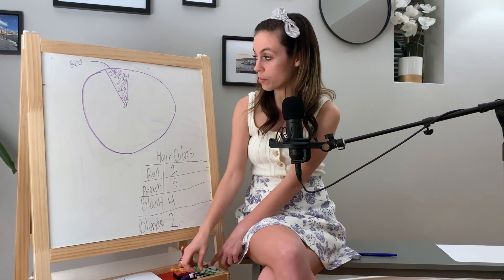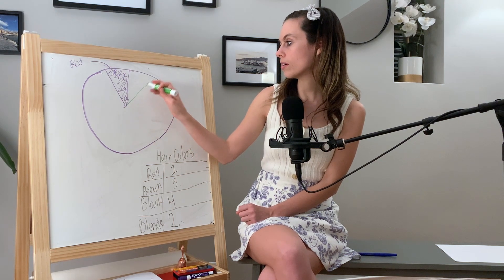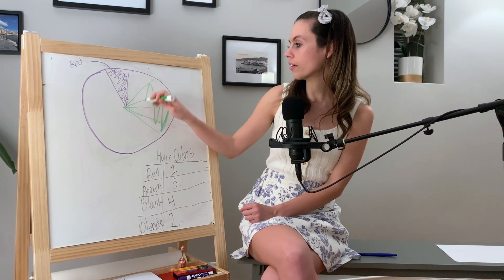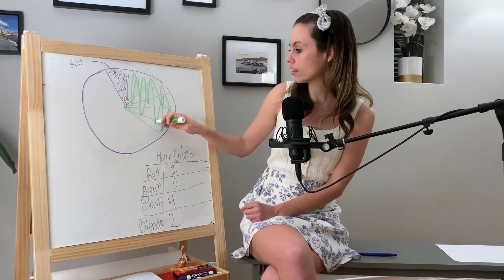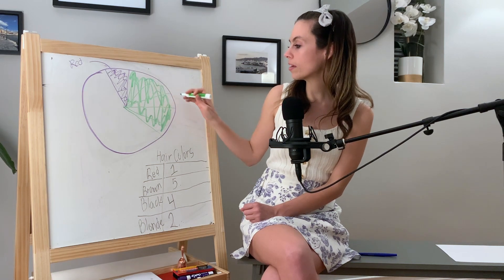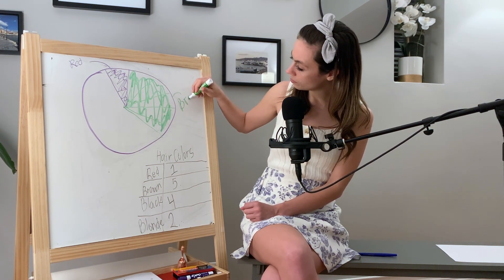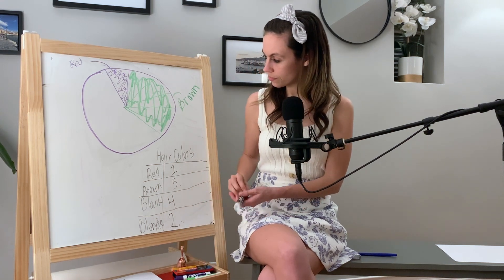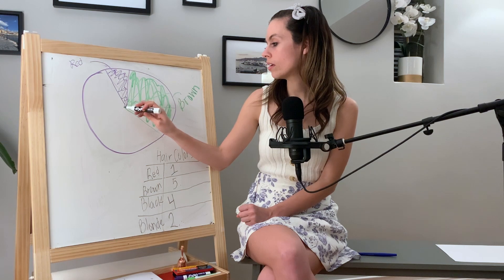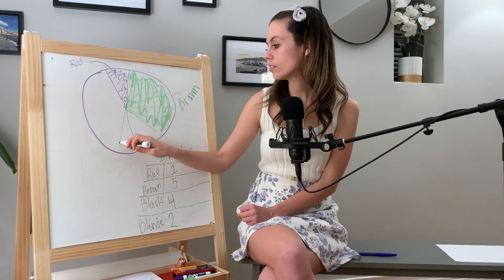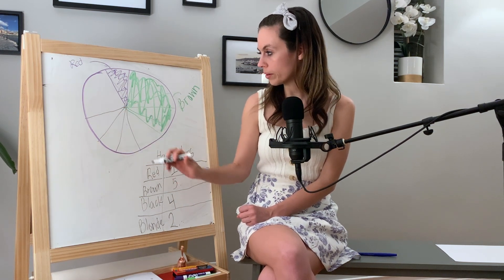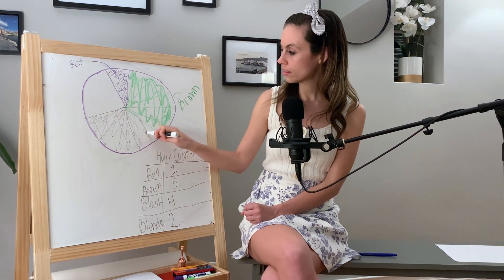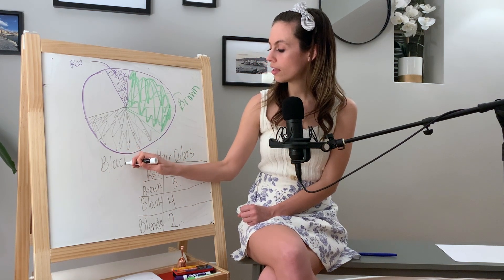Brown has the most, so I'm going to do one, two, three, four, five pieces and color all of that green. Then I'll label this brown hair. Black has four, so I'm going to do one, two, three, four pieces, color those in, and label this black with a little arrow.